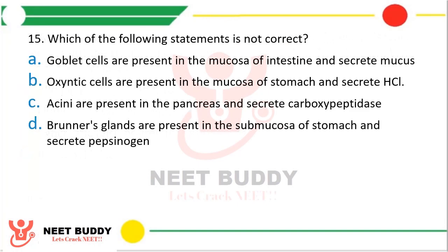Question 15. Which of the following statements is not correct? Goblet cells are present in mucosa of intestine and secrete mucus. Oxyntic cells are present in mucosa of stomach and secrete HCL. Acini are present in pancreas and secrete carboxypeptidase. Brunner's gland is present in submucosa of stomach and secrete pepsinogen. The correct answer is option D is incorrect — Brunner's gland is present in submucosa of duodenum, not stomach, and it does not secrete pepsinogen.